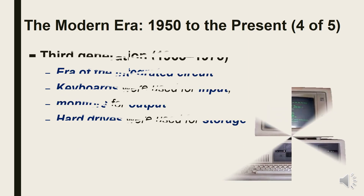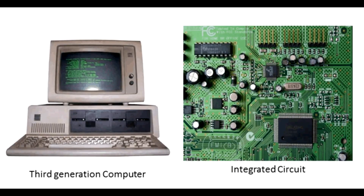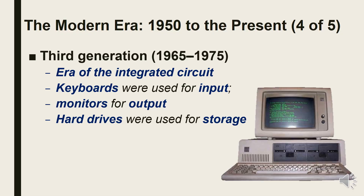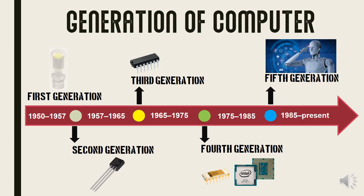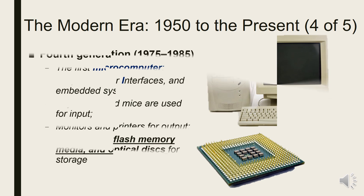Computers from 1965 to 1975 were the third generation, considered the era of the integrated circuit and the birth of the first minicomputer. Computers in this generation were no longer room-sized but desk-sized, in which keyboards were used for input, monitors for output, and hard drives for storage.